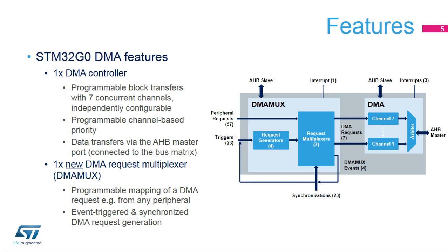Two units are in charge of handling DMA transfers: the DMA request multiplexer — DMAMUX — and the DMA controller. The DMA controller transfers data from a source address to a destination address and manages the priority between the channels. The DMAMUX enables the user to map requests to channels, and also handles triggers and synchronizations. The DMAMUX is described in a dedicated presentation.